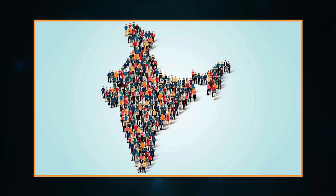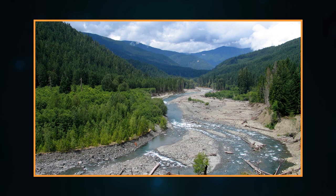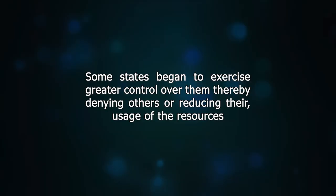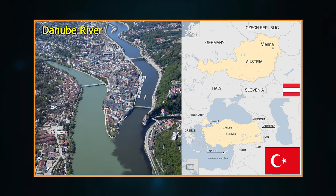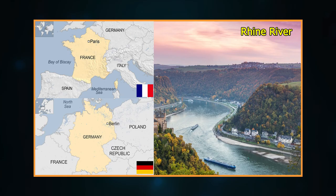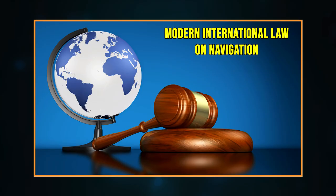The problem has since become more acute because of increasing population. The increasing demand over availability has been creating scarcity and resultant disputes. Rivers that form natural boundaries, flow through successive domains, and came to be used as common highways were supposedly open to all for communication and commerce. However, some states began to exercise greater control over them, thereby reducing others' usage of resources. This necessitated the framing of laws as disputes over ownership rights of water increased. Conventions about the Danube between Austria and Turkey in 1619, and the Rhine between Germany and France in 1697, were among the early landmarks in making modern international law on navigation.